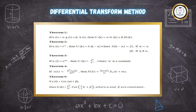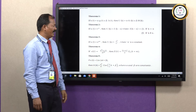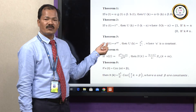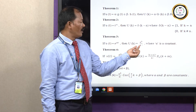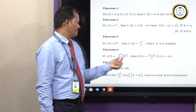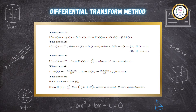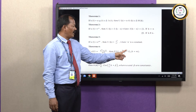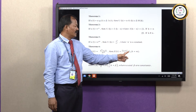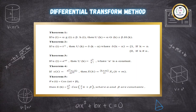Theorem 3 states: if u of t is equal to an exponential function e to the power at, where a is a constant, then the differential transformation gives capital U of k equal to a to the power k upon k factorial. Theorem 4 states: if x of t equals the m-th derivative of x1 of t with respect to t to the power m, then capital X of k equals k plus m factorial upon k factorial, times x1 of k plus m. We will be using Theorem 4 quite often.